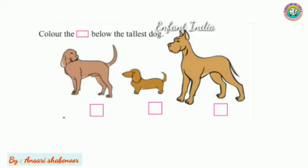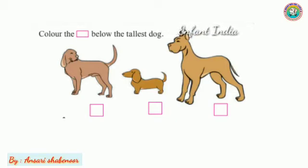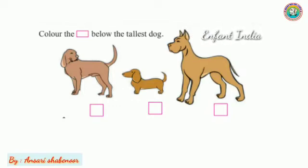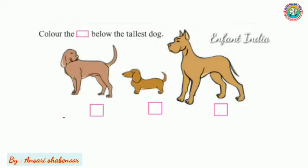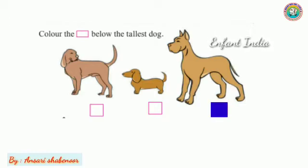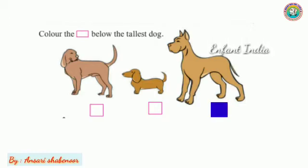Now, aap ko in one, two, three mein se sabse uncha kaunsa dekh rahe hain? Very good. Jo number third pe hai, woh sabse uncha hai — tallest hai. Toh tallest dog mein humay kya karna hai? Color karna hai us box mein. Toh hum number three pe color karenge.